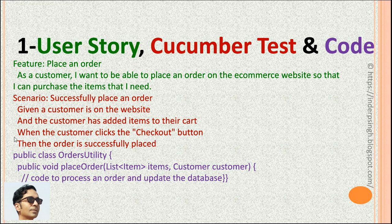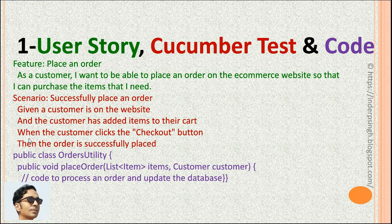The green and red shown here is the Cucumber test. In the Cucumber test there is a scenario, which gives us steps and expected results. For example, the scenario is 'Successfully place an order.' 'Given' means the preconditions — given a customer is on the website and the customer has added items to their shopping cart. 'When' means the actions or operations or steps of the test — when the customer clicks the checkout button. 'Then' means the expected result — then the order is successfully placed.